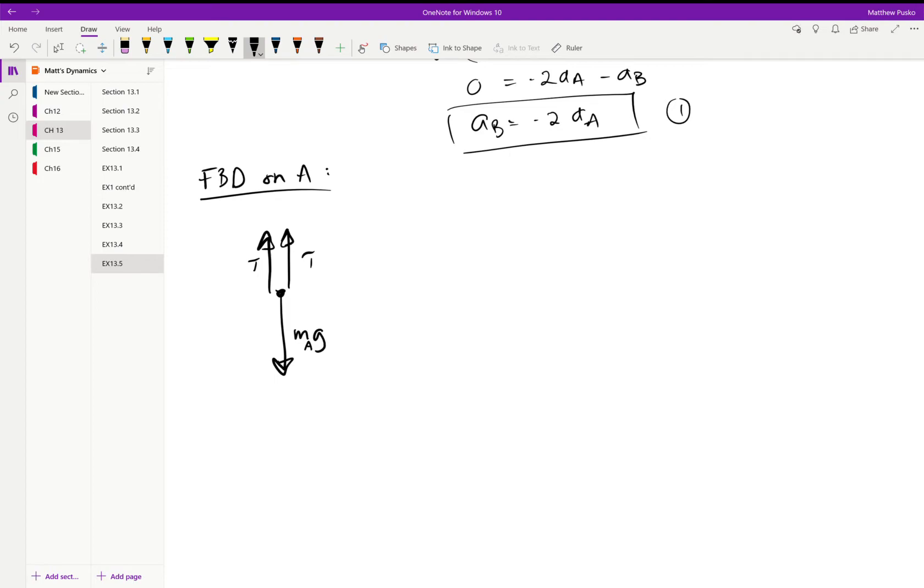We have basically a 2T going up and a mass times g going down. This does not mean the two are equal. This is the second biggest mistake I see on these problems - these two things are not equal, it is not in equilibrium, this is not statics class.